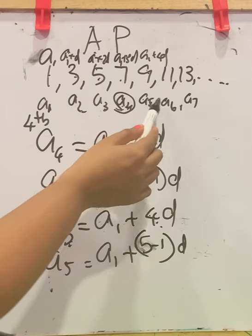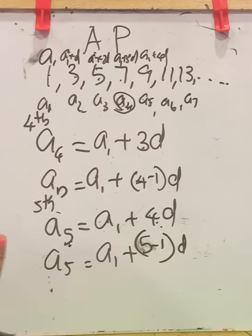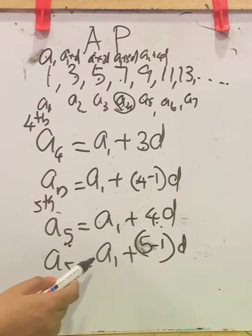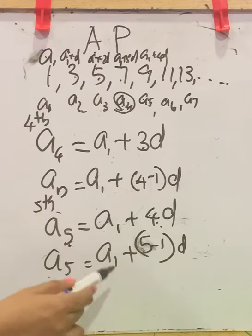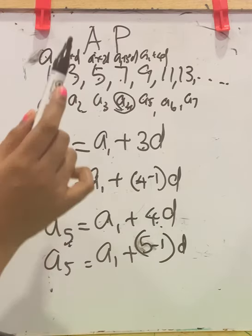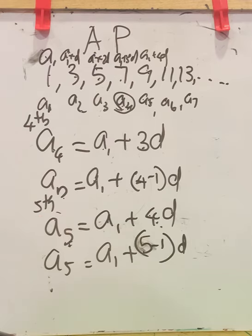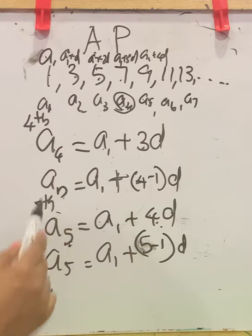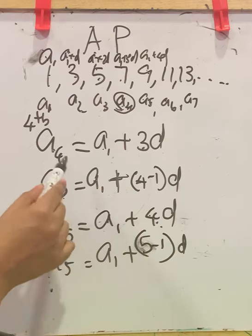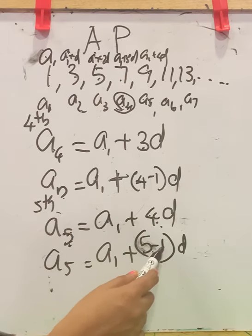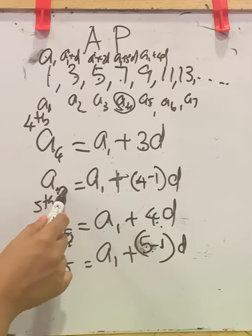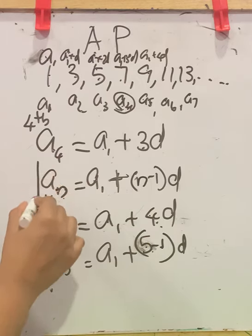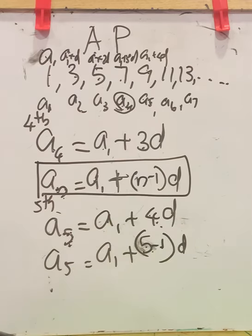We don't know which term it is, so we simply write it as the nth term, AN. From all this, you can see the first term A1 always comes first. To get A4 you subtract 4 minus 1; to get A5 you subtract 5 minus 1; so to get the nth term, it will be N minus 1. So the general formula for the nth term of an AP is: AN equals A1 plus (N minus 1) times D.